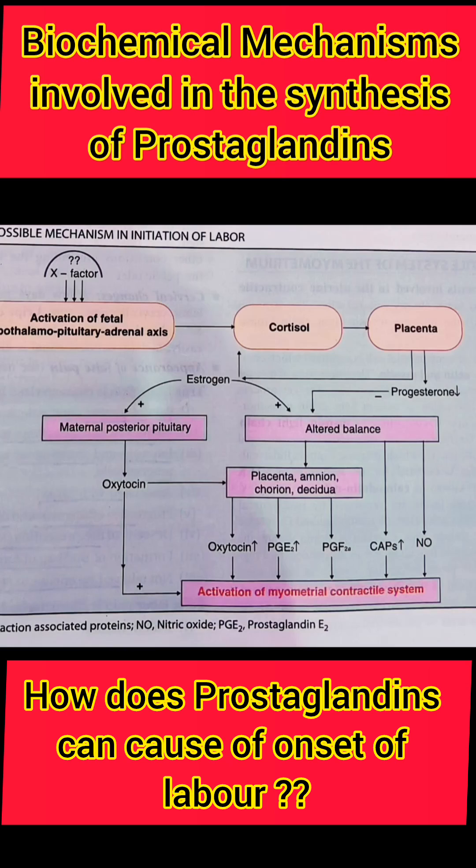These prostaglandins — E2 and F2 alpha — diffuse into the myometrium and act directly at the sarcoplasmic reticulum, causing inhibition of intracellular cAMP generation. The reduction in intracellular cAMP increases local free calcium ions, causing uterine contraction.